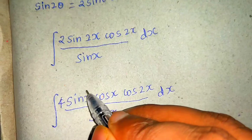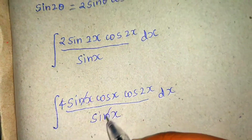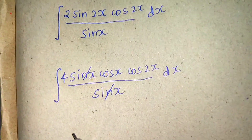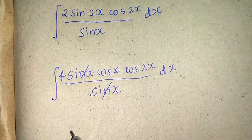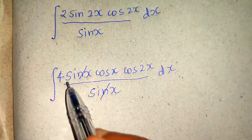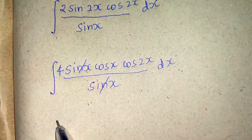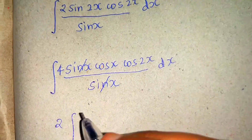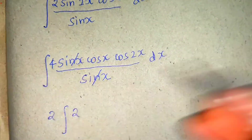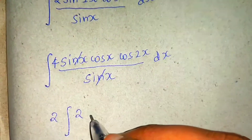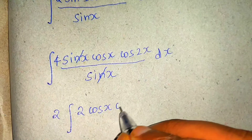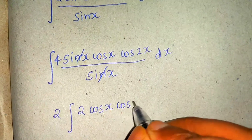The good thing that happened is that sinx got cancelled. Now I can take one-half out, and I'm left with cos(x)·cos(2x) inside the integral.